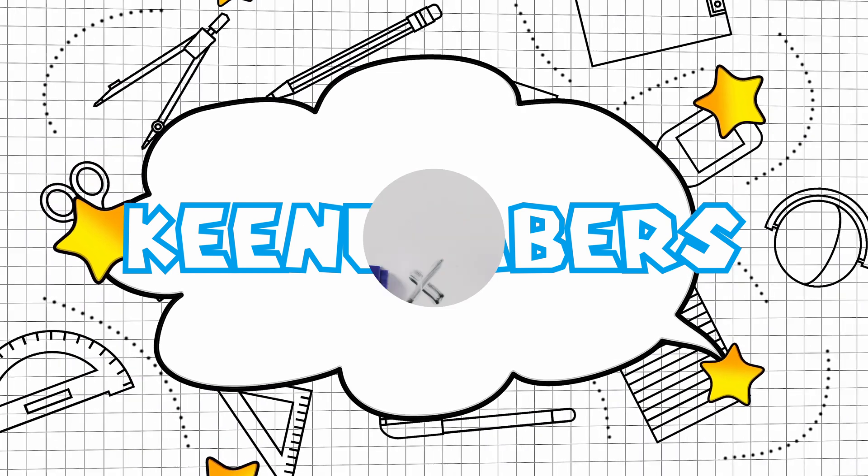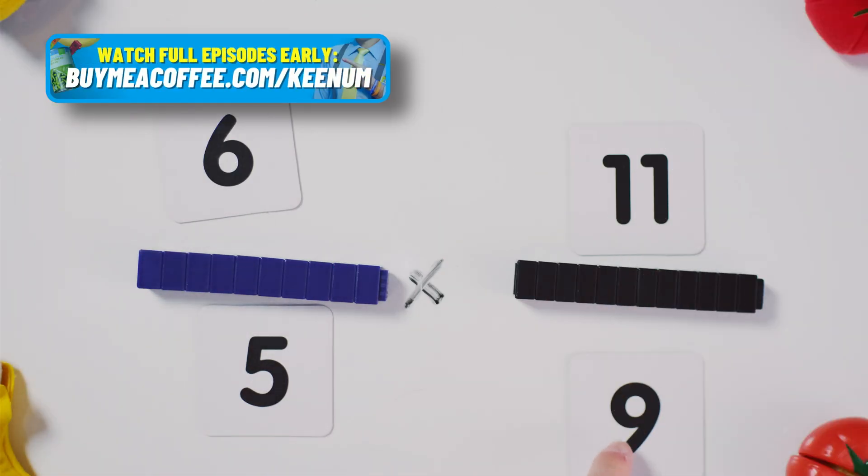Welcome to the bonus section. Let's multiply six fifths by eleven over nine. You're gonna go straight across. Numerator times numerator, denominator times denominator.